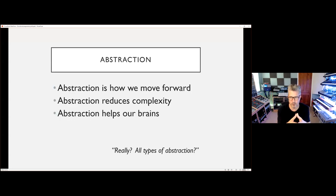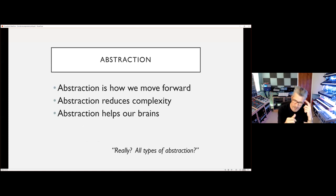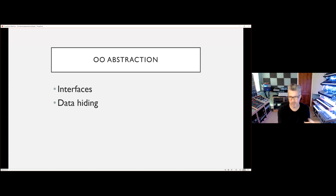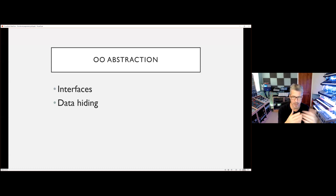Abstraction is how we move forward as an industry — it's how we tame complexity. But why do we need to tame complexity? The computer doesn't care how complex your program is. We need abstraction to help our own brains. The weak and feeble grey matter between our ears isn't evolving quickly enough to deal with the explosion of complexity. So how does OO do abstraction? Through interfaces, which hide the implementation and allow a common surface to many implementations.